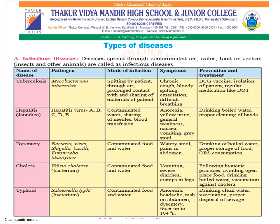What is the meaning of the term pathogen? A pathogen is a microorganism that can cause disease. In a similar manner, you can see the other diseases also — for example, hepatitis, dysentery, cholera, and typhoid — where you can see the different pathogens like hepatitis virus ABCDE, bacteria, virus, Vibrio cholerae, and typhoid is caused by Salmonella typhi.